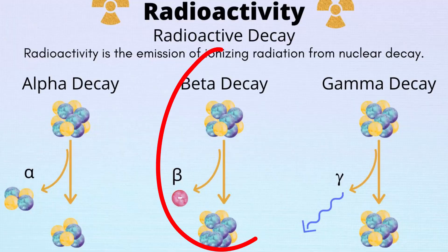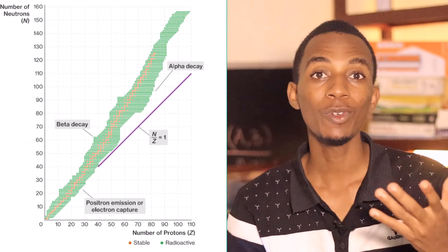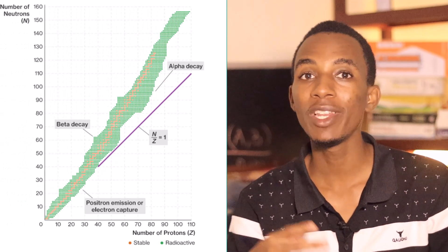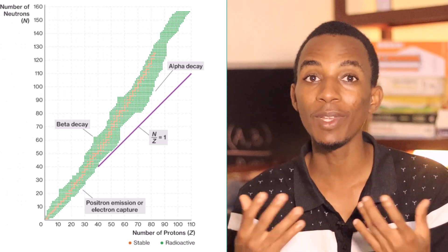Now let's focus on beta decay, which is a specific type of radioactive decay. When a nucleus has too many protons or too many neutrons, it becomes unstable. So to regain stability, the nucleus may undergo beta decay. But here's the problem: there are no electrons in the nucleus, so how does it release an electron?